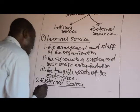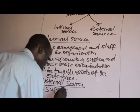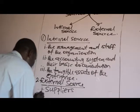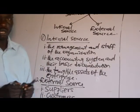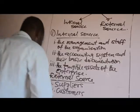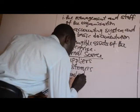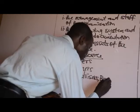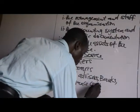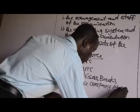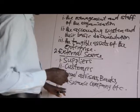The external sources of Audit Evidence include: number one, suppliers; number two, customers of that entity; number three, legal advisors; as well as banks and insurance companies, among others. These are the audit evidence that arise from external sources.